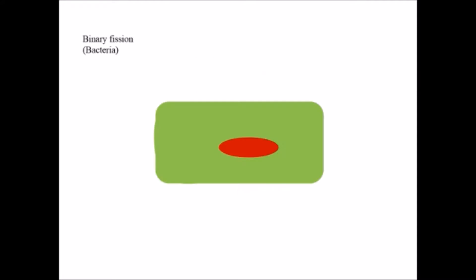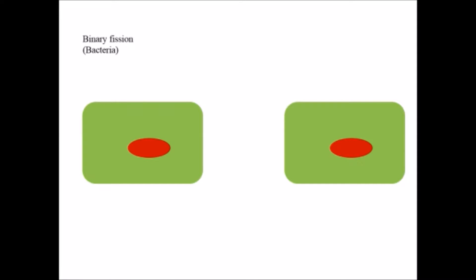But if you see bacteria, it will grow through binary fission, that means its body divided into two along with the nucleus to form two daughter cells. Likewise, different organisms have different ways of reproduction.